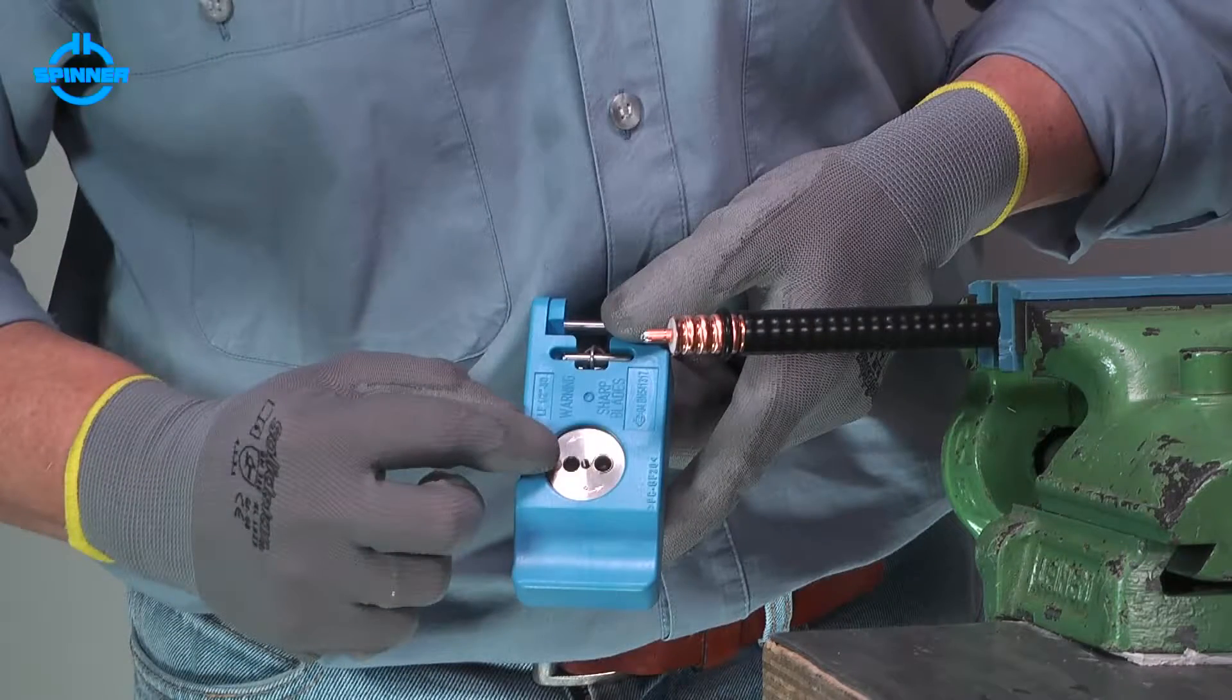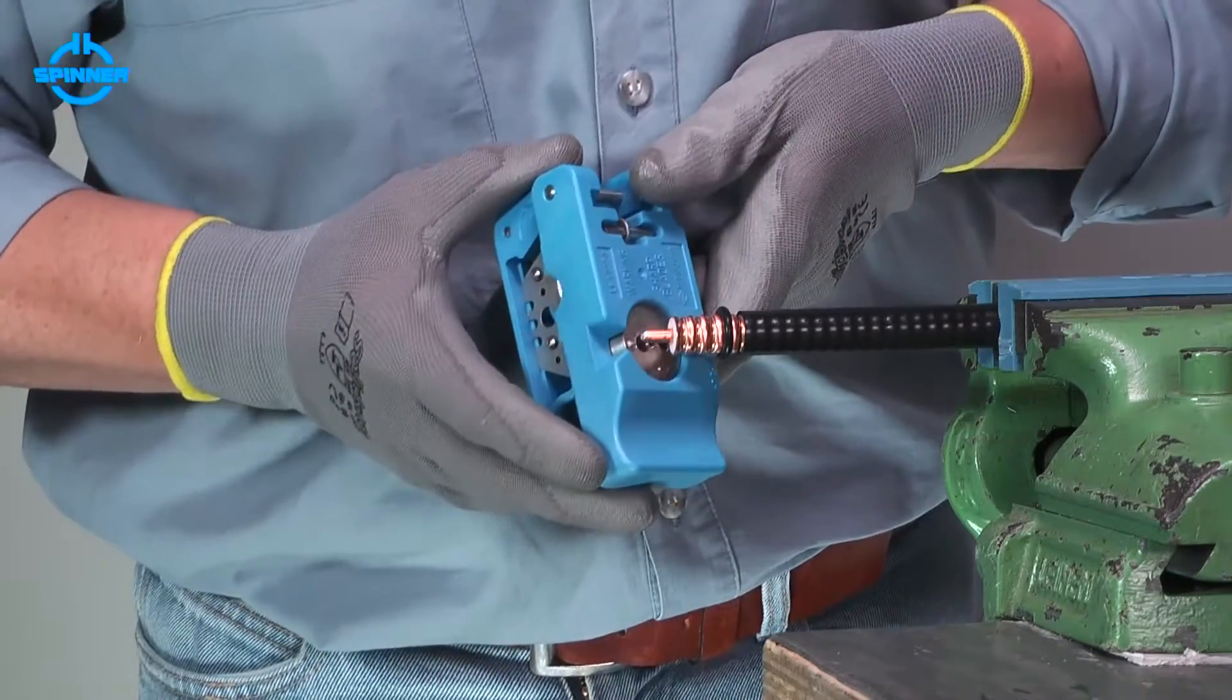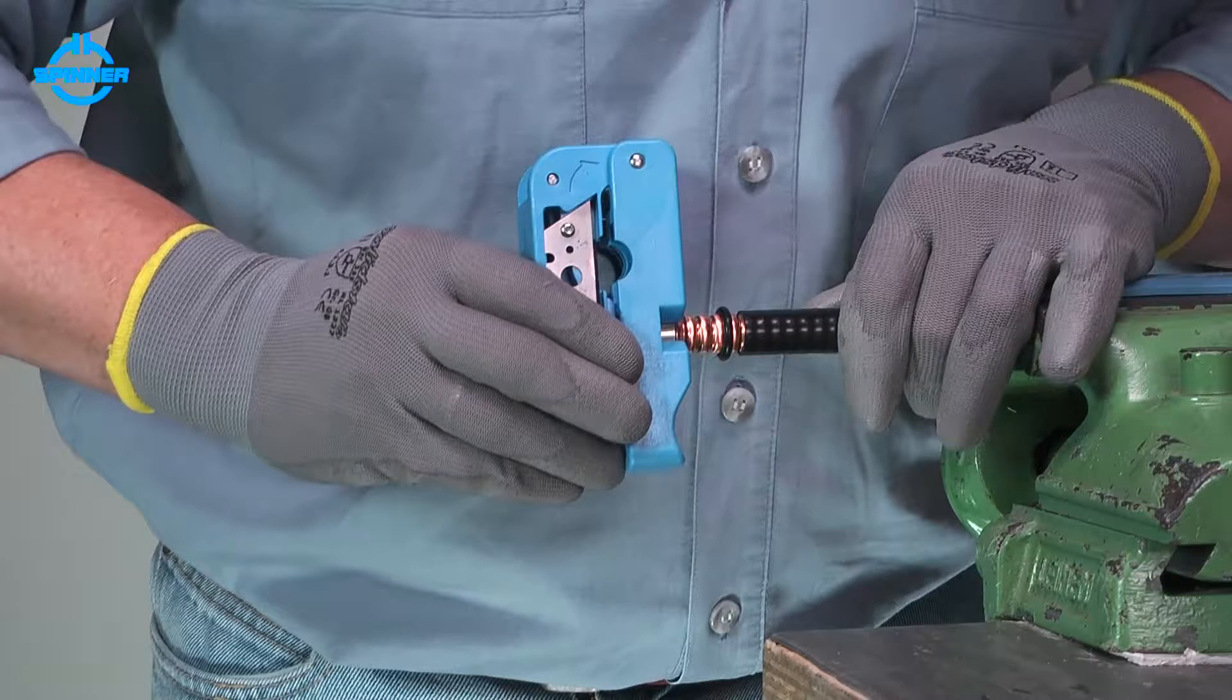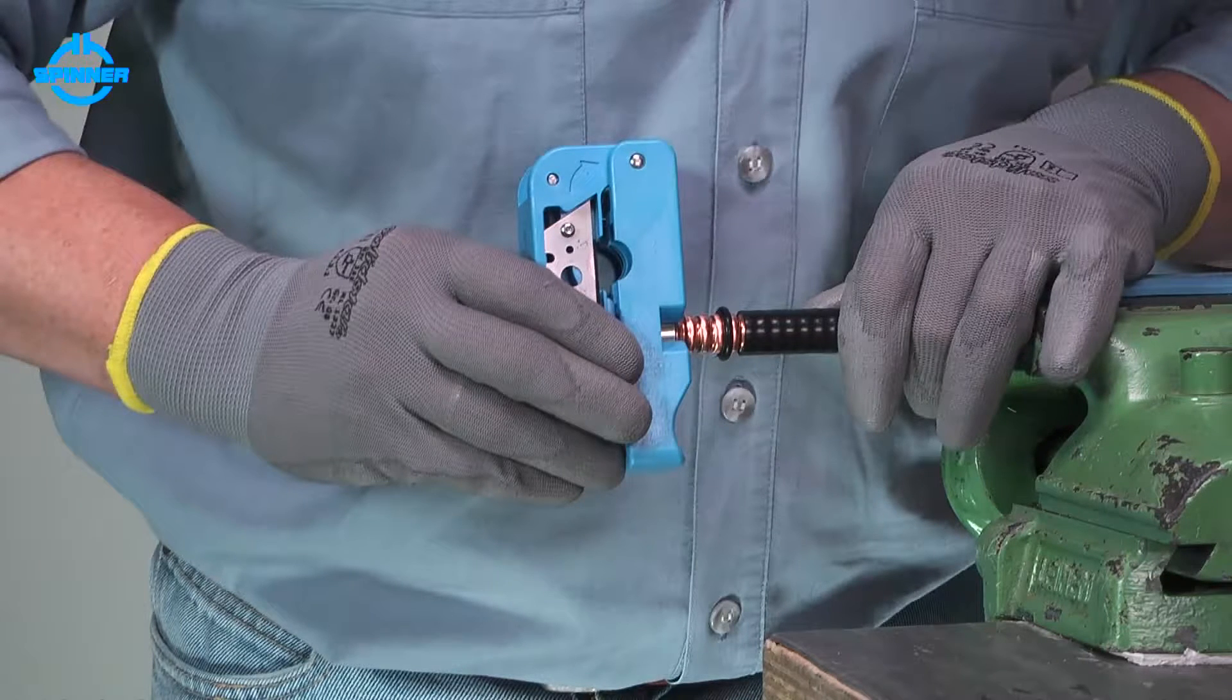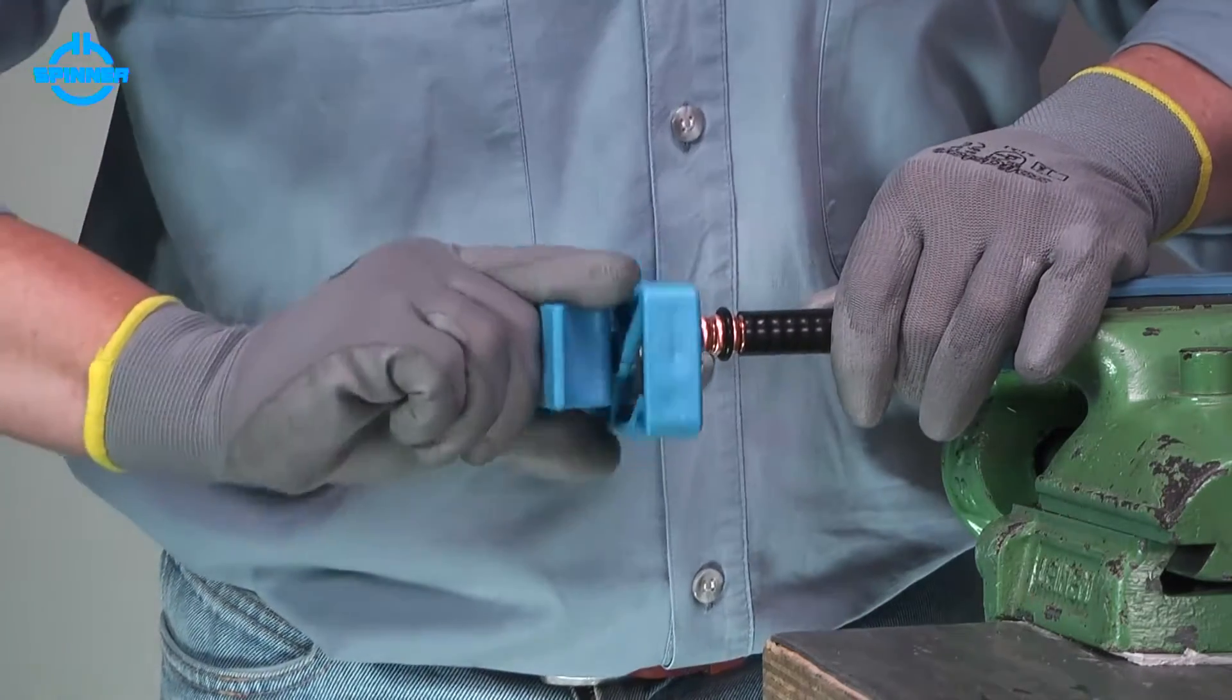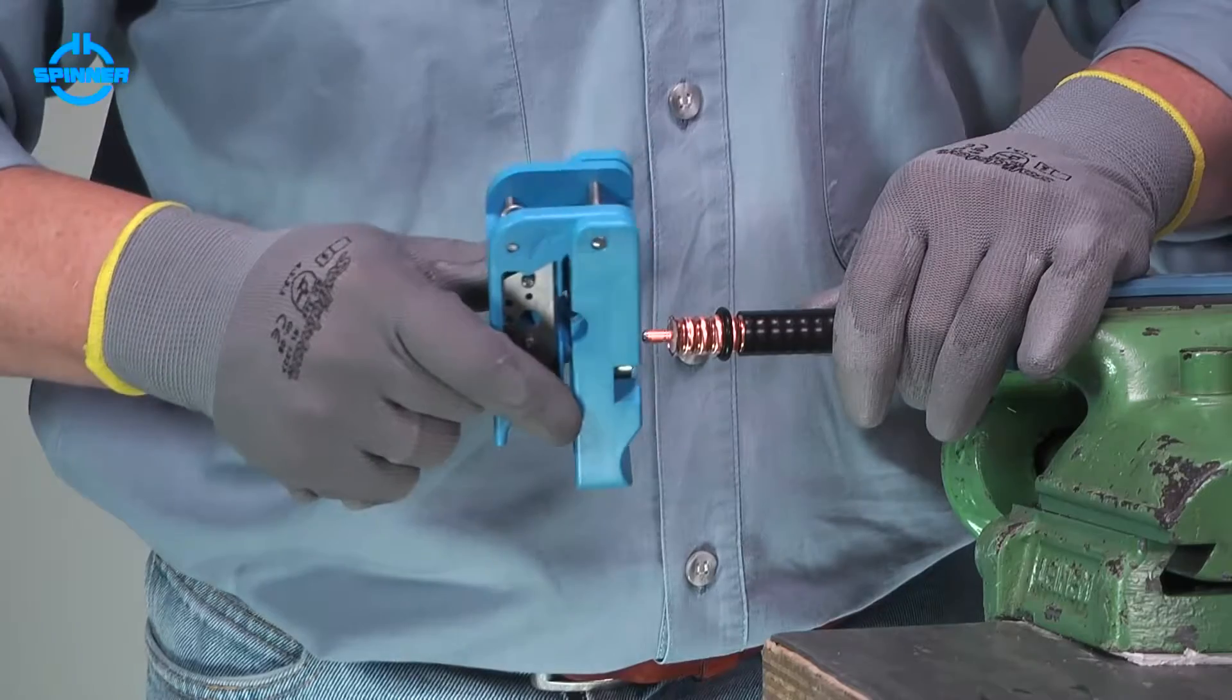Insert the flaring unit's guide hole onto the inner conductor. Ensure that the flaring unit's spike is positioned under the outer conductor. Turn the tool clockwise to flare the outer conductor.